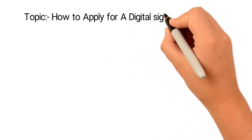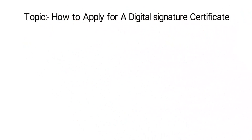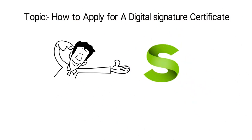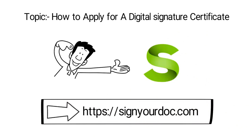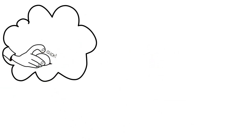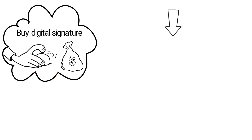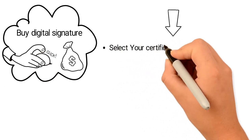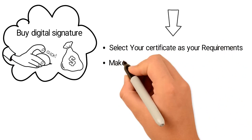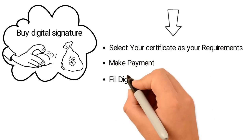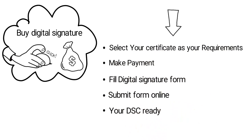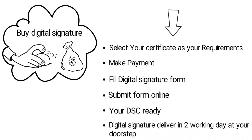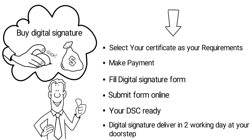How to apply for a digital signature certificate. Our company name is SignYourDoc. Visit SignYourDoc.com, click on the Buy Digital Signature option, and purchase any type of digital signature certificate. Select your certificate as per your requirements, make payment, fill the digital signature form, and submit the form online. Your DSC is ready and will be delivered in 2 working days at your doorstep.